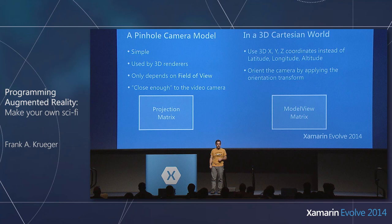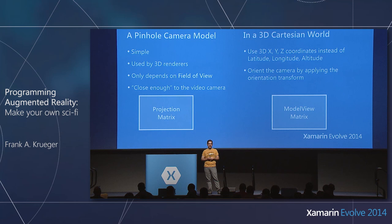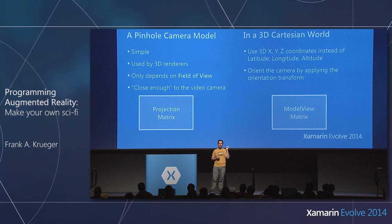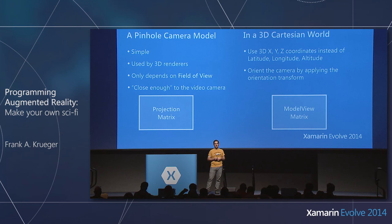To overlay anything — 2D or 3D — we need an in-memory representation of the phone's camera: a virtual camera model. We'll use the pinhole camera model, which assumes all light focuses to an infinitely small point in space. Essentially every video game and CGI movie uses the pinhole camera. It's computationally efficient and super easy to work with, even though it's a simplified representation.